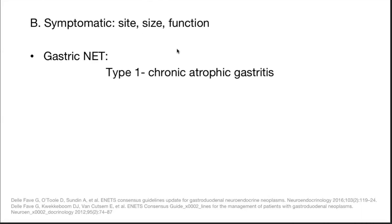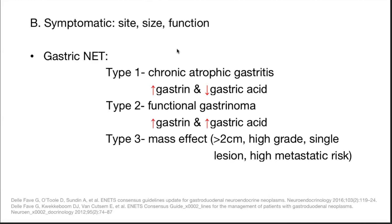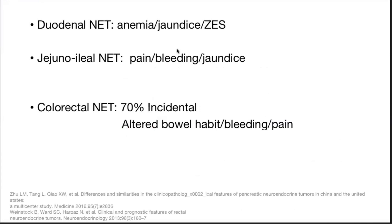Type 1 is associated with chronic atrophic gastritis, type 2 is associated with functional gastrinoma, and type 3 generally presents with mass effect — they are more than 2 cm, high grade, single lesion, and high metastatic risk. Type 1 is associated with increased gastrin and decreased gastric acid; type 2 — both gastrin and gastric acid are increased; and type 3 — both gastrin and gastric acid are normal.